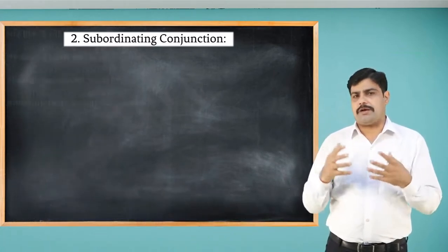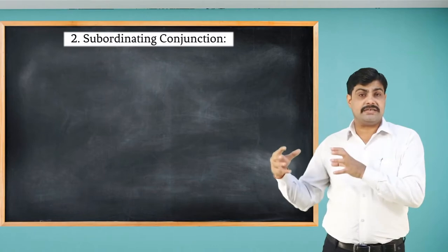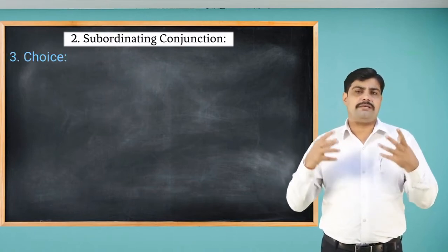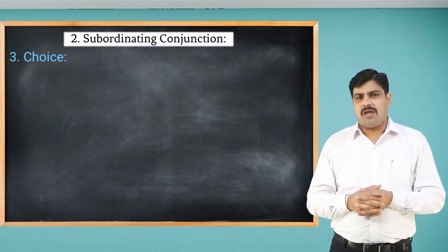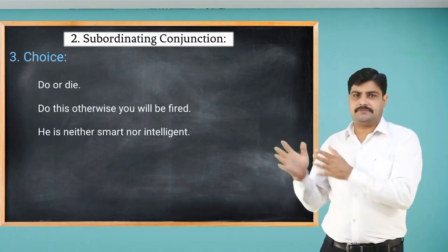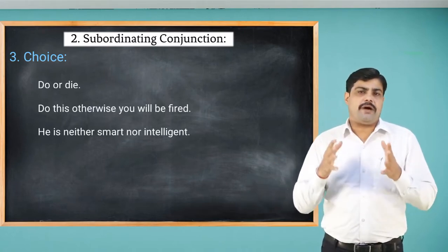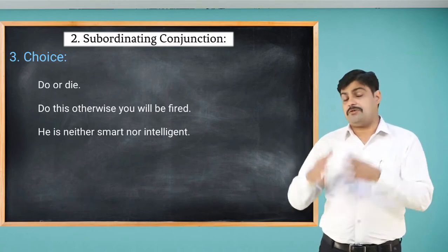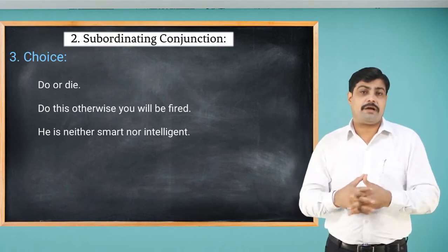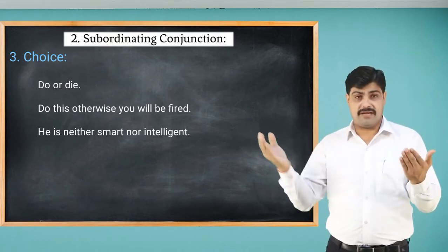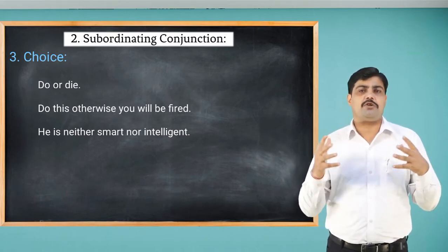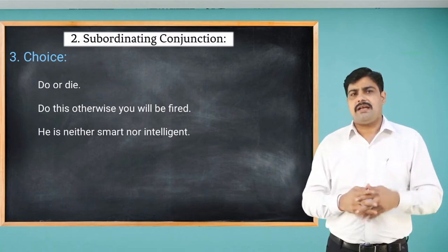To show choice in sentences, we use conjunctions like or, otherwise, neither...nor. For example: 'Do or die' — here 'or' represents choice. 'Do this, otherwise you will be fired' — 'otherwise' is used for choice. 'He is neither smart nor intelligent' — 'neither...nor' also represents choice.